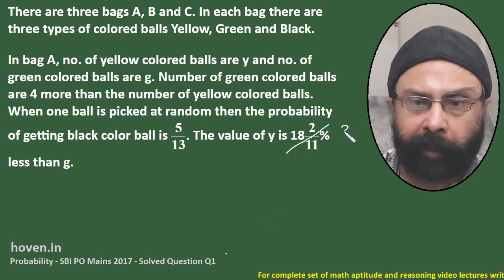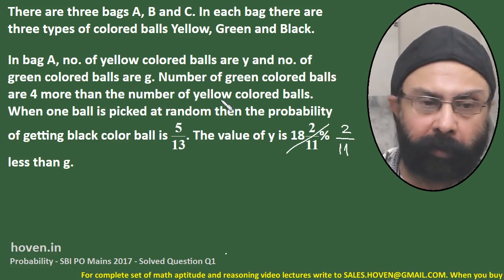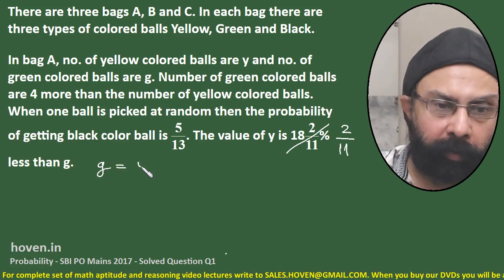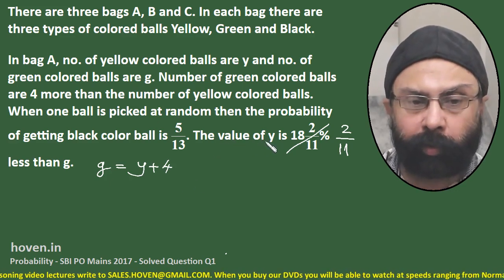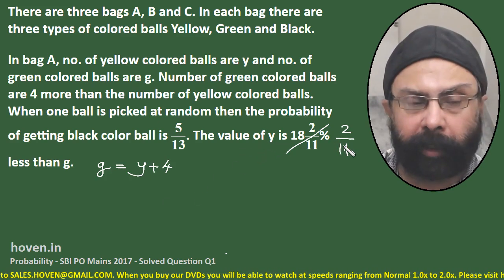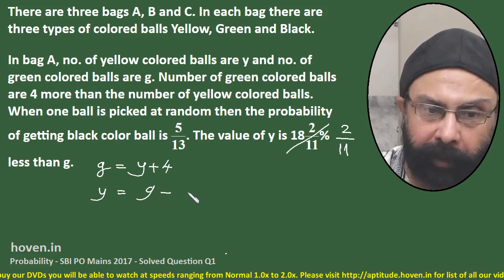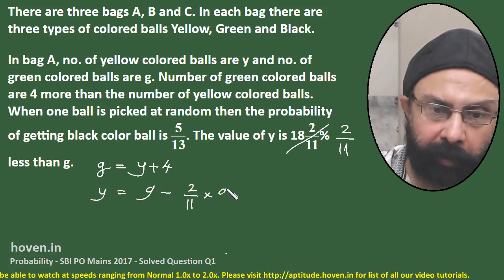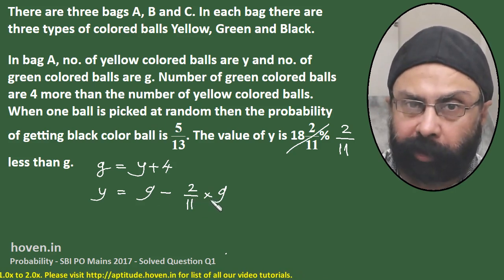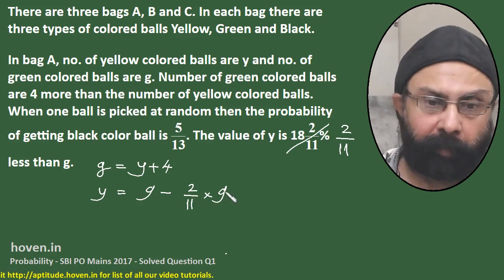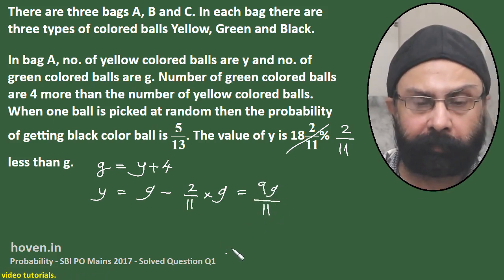I will write this simply as 2/11. Green colored balls are four more than yellow colored balls, so I can write G = Y + 4. And from the last statement, Y is 2/11 fraction less than G, so Y = G minus 2/11 of G, which comes to 9G/11.